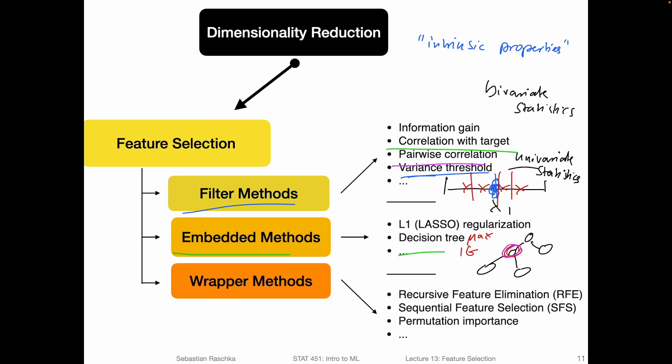Lastly, there are these wrapper methods. The wrapper methods are, I would say, closest to our main goals if our main goal is optimizing the predictive performance of a model. Here, we fit a model on different feature subsets usually, and then based on the performance of the model, we select or eliminate features. To give you one intuitive example, consider a feature set ABC.